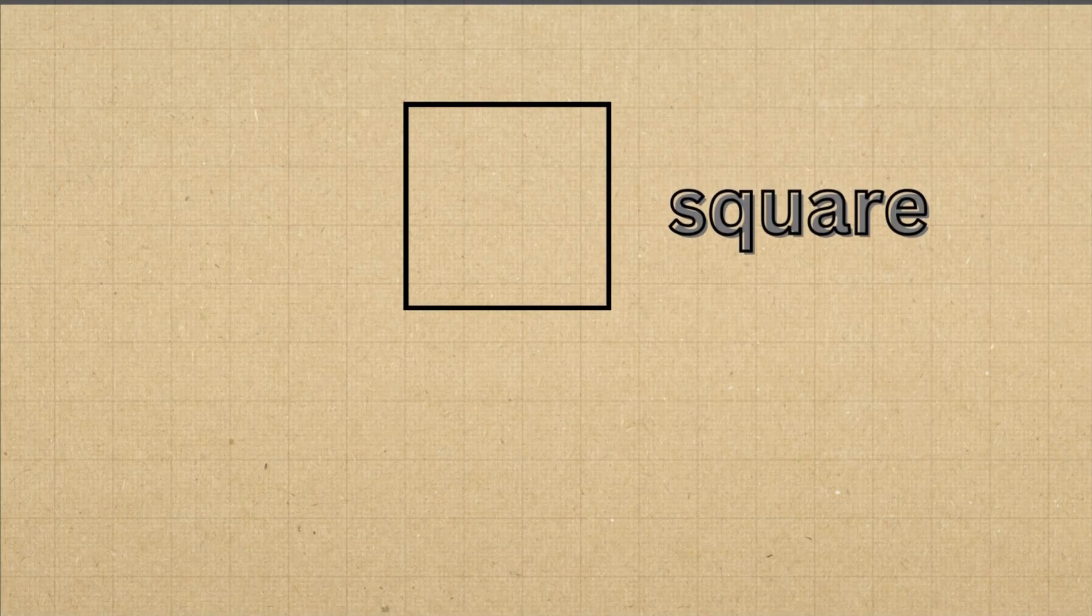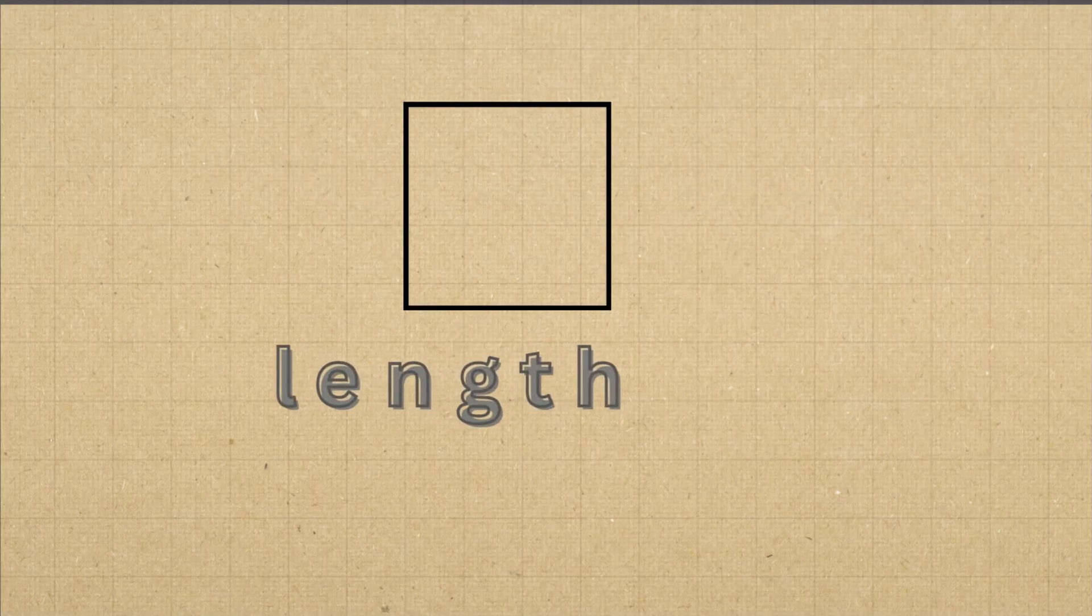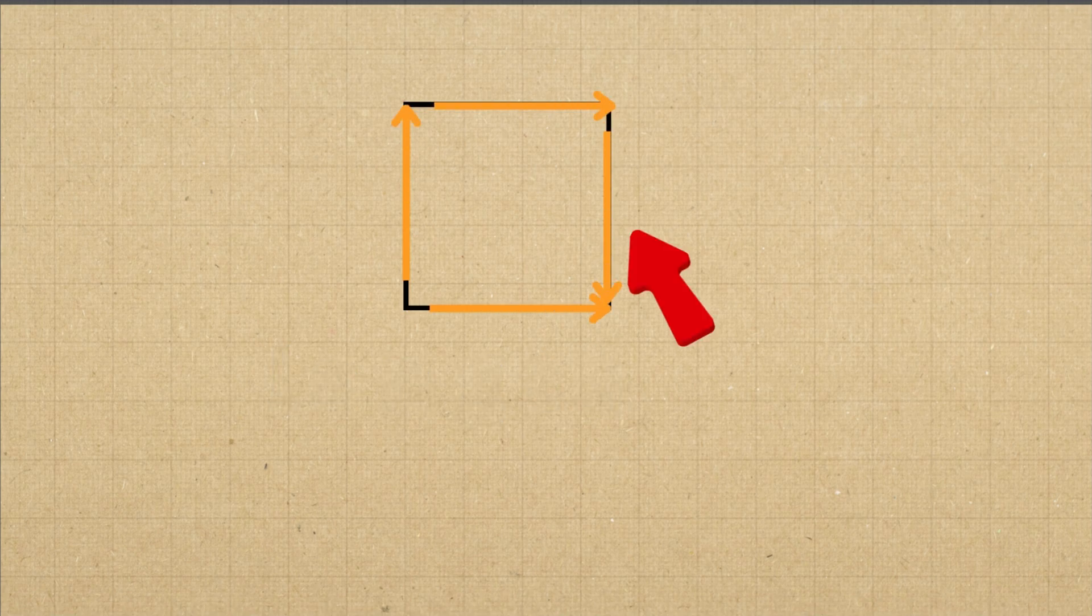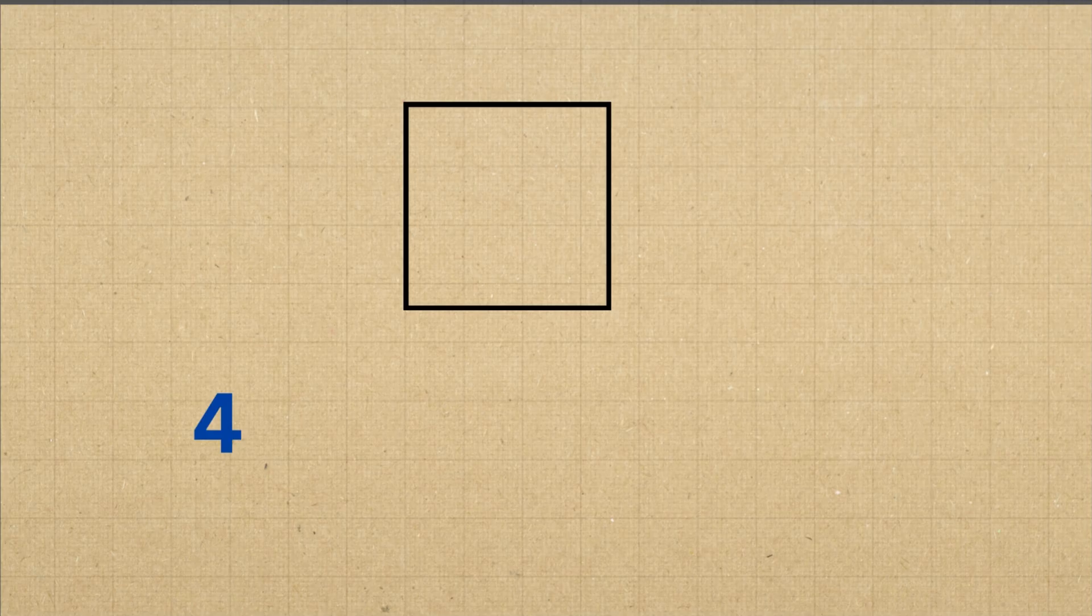Take a look at this shape square. A square has 4 equal sides, meaning all sides have the same length. To find the perimeter of a square, you multiply the side length by 4. We use the formula P equals 4s, where s represents the side length of the square.